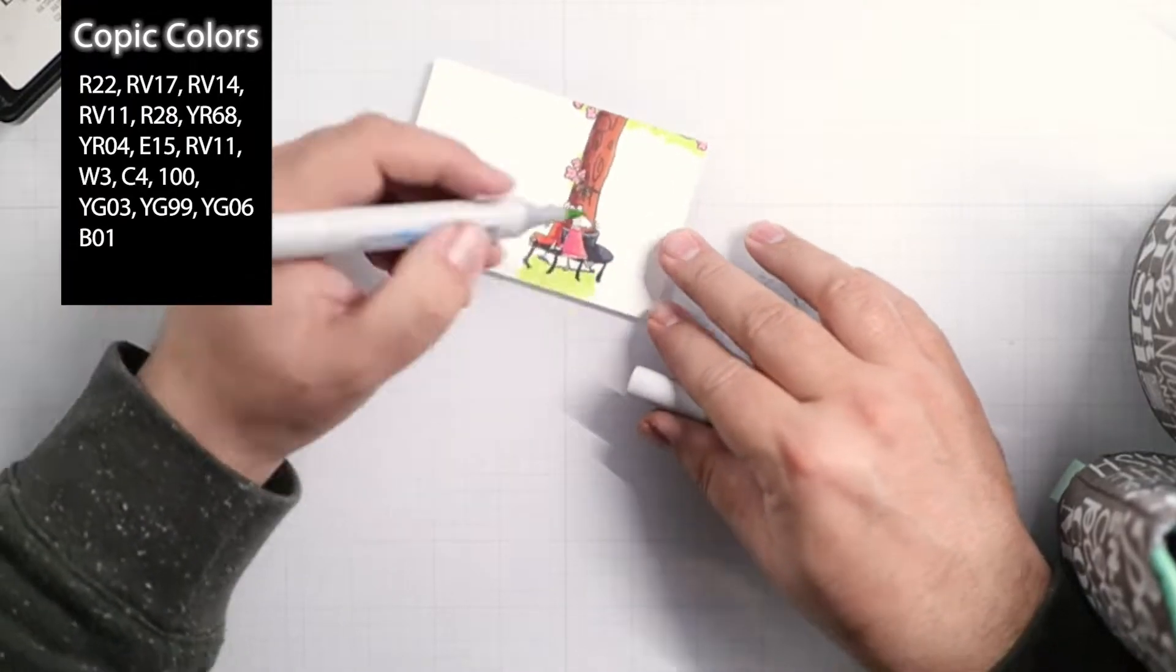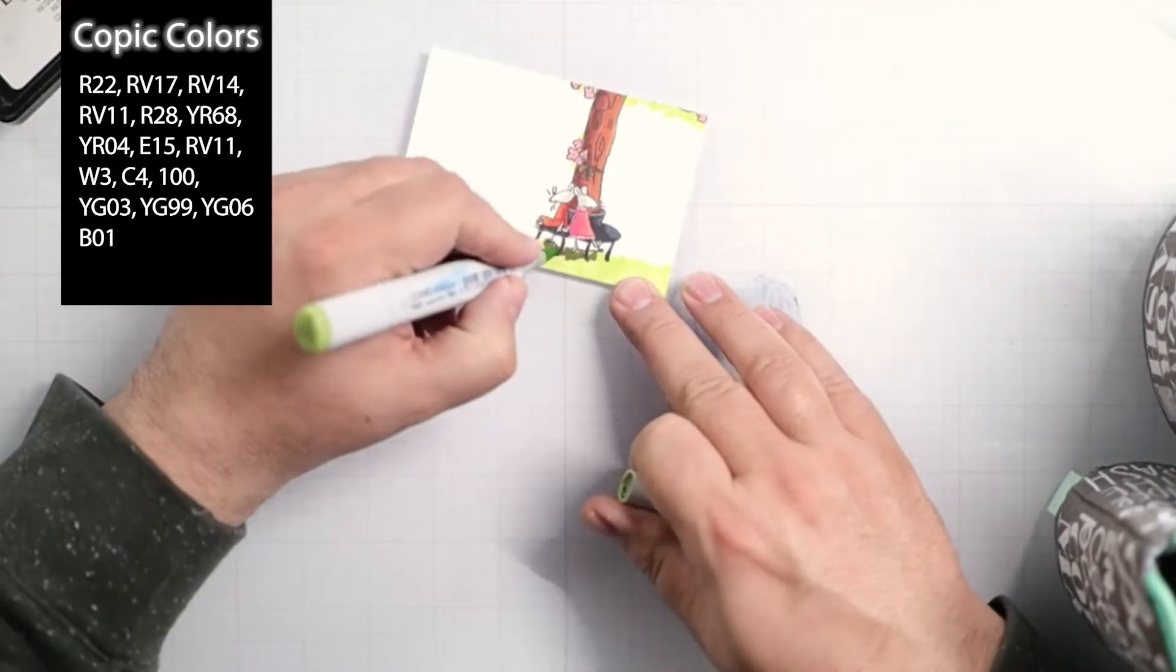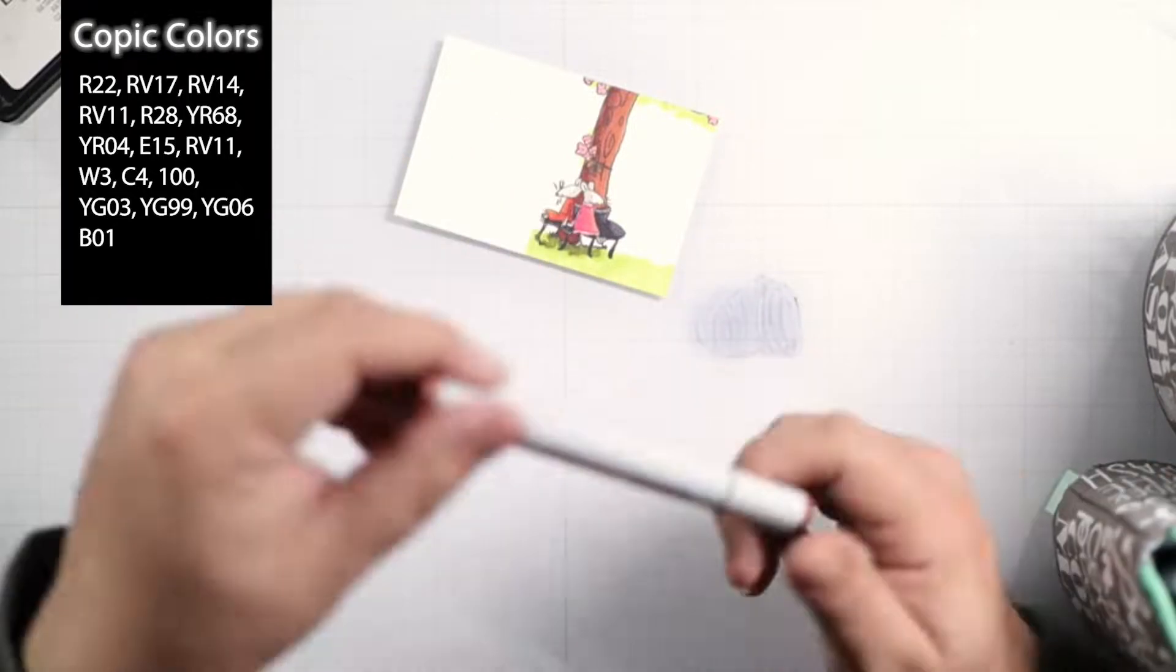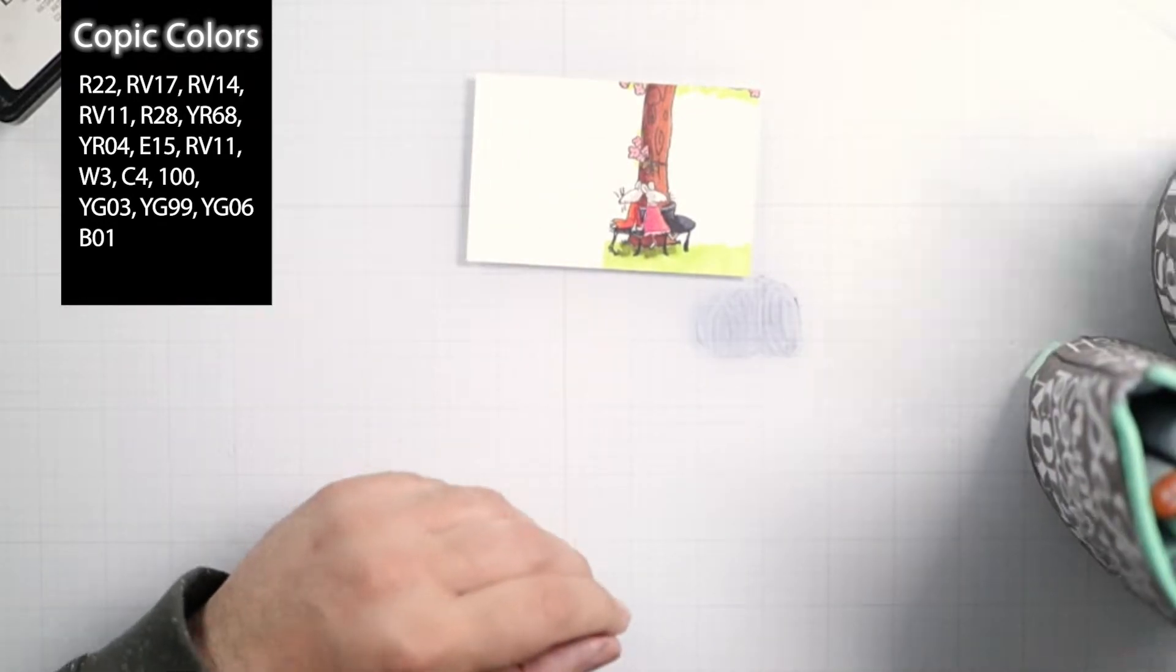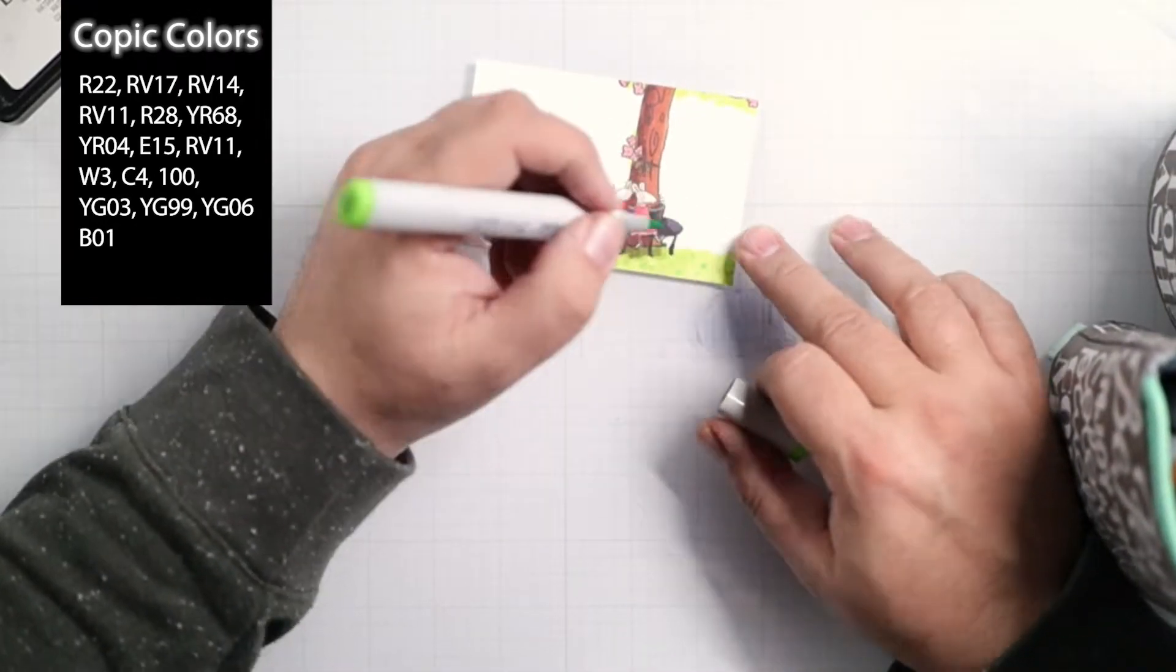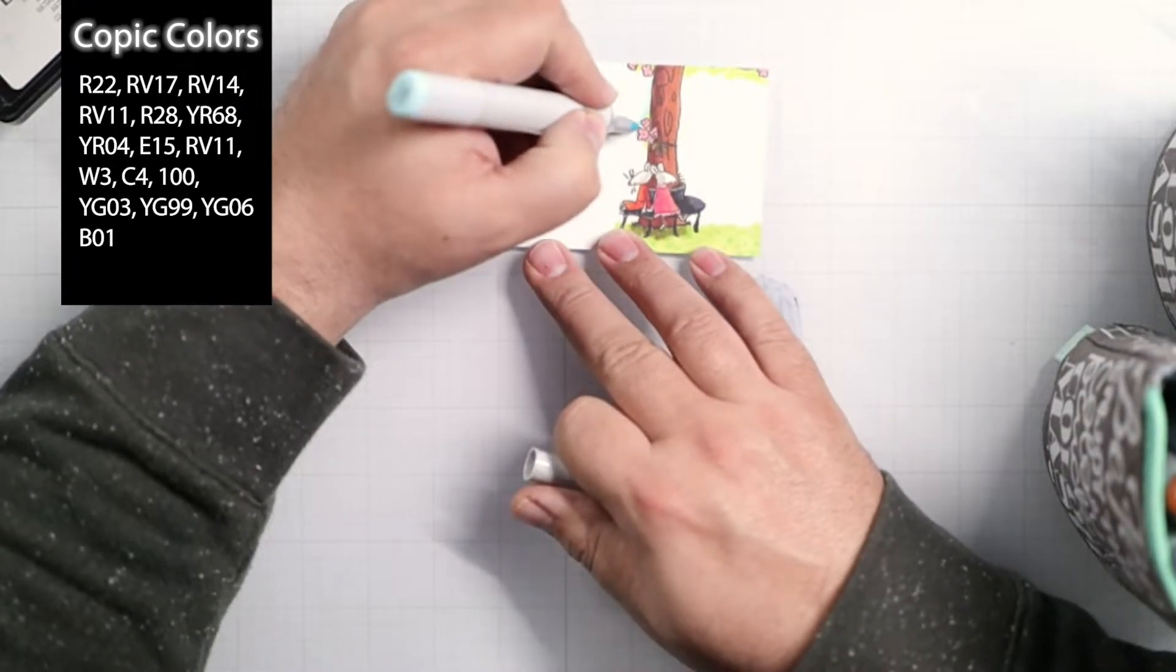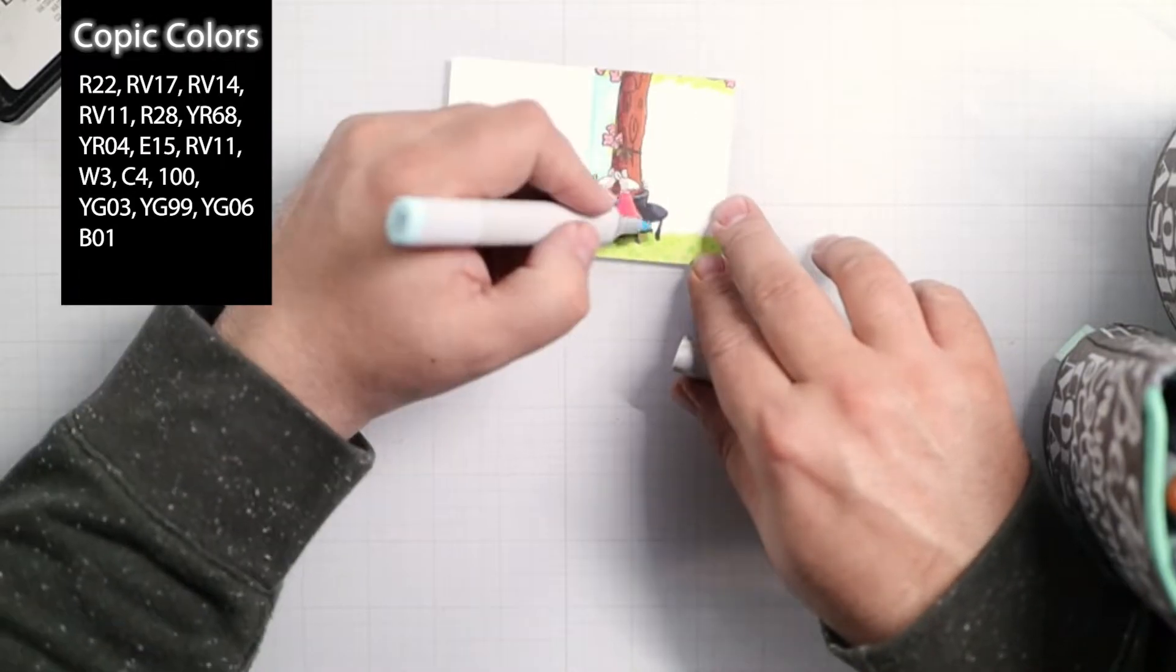Continuing on: YG03, YG99, YG06, and B01 to finish out my skies. That's our Copic palette for today. All five of the little mini cards will have this palette, and I may have thrown in an E43 in there somewhere.